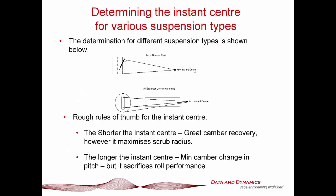Determining the instant center for various suspension types is basically a glorified version of connecting the dots. For a McPherson strut, we take a right angle from the strut, go down, take the lower control arm to the intersection point — that's the instant center. For a V8 Supercar live axle rear end, exactly the same deal as the double wishbone: upper control arm, lower control arm, go to the intersection point — that's the instant center. It's as simple as that. Don't over complicate it.